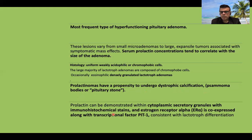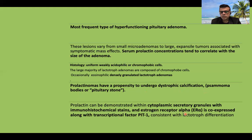Prolactinomas can be differentiated from other pituitary adenomas by immunostaining for prolactin, which is a confirmatory feature. Apart from that, there is positive staining for estrogen receptor alpha, and the transcriptional factor Pit1 is also consistently expressed in prolactinomas.